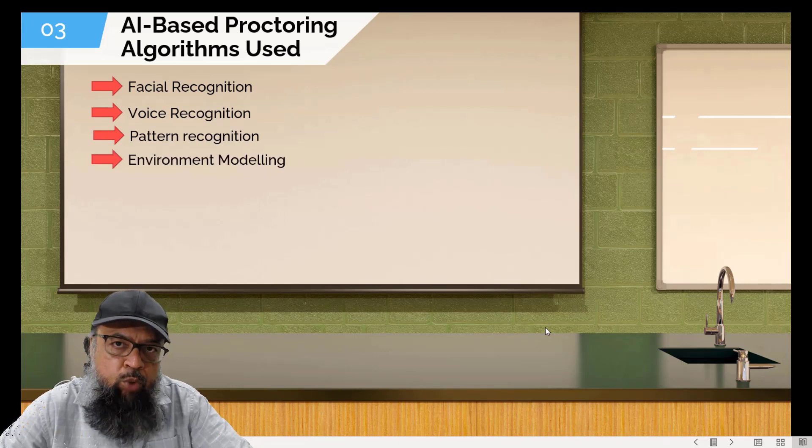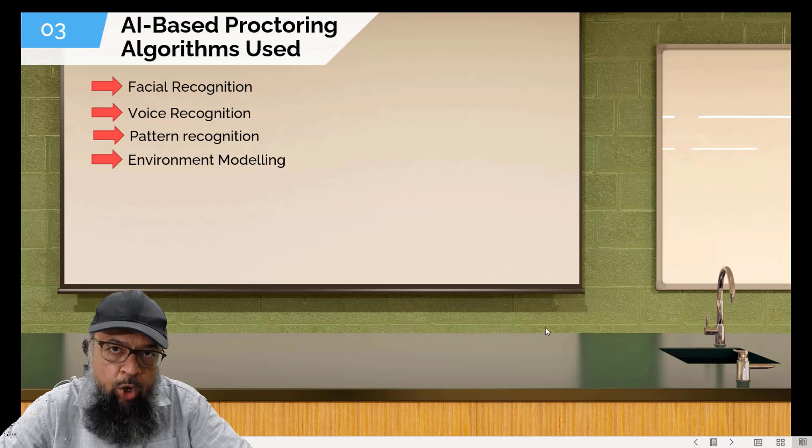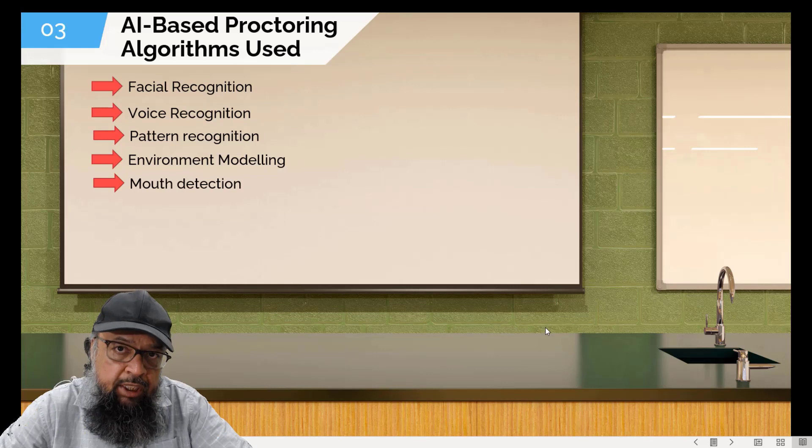They also try to model the environment and see if the environment changes. For example, if a person enters into the environment, they will be able to detect if they have a model of the environment in their algorithm. Similarly, they have some mouth detection algorithms. So if a student is talking to someone, they can raise a flag or an alert to the human proctor.